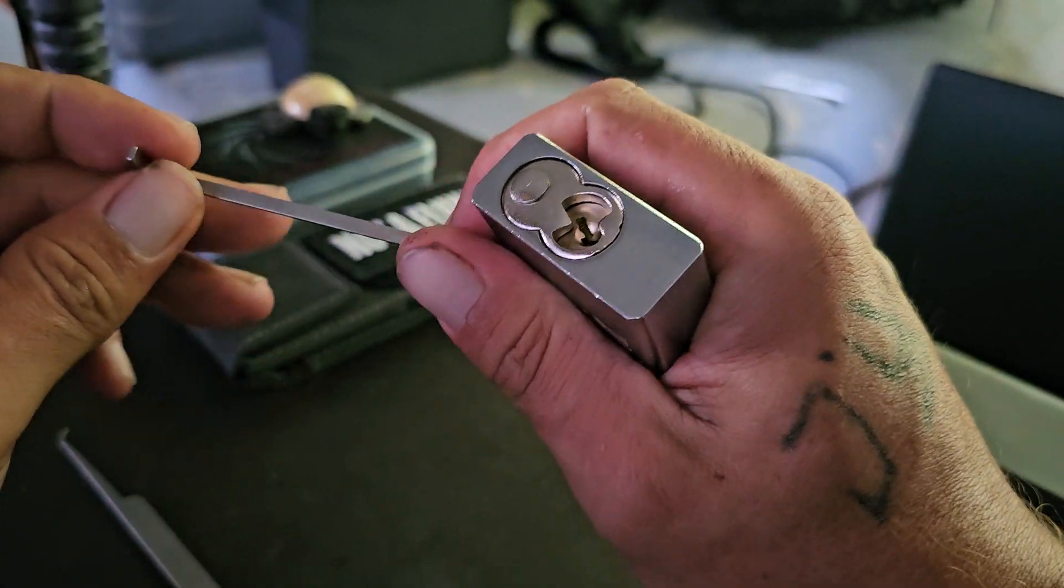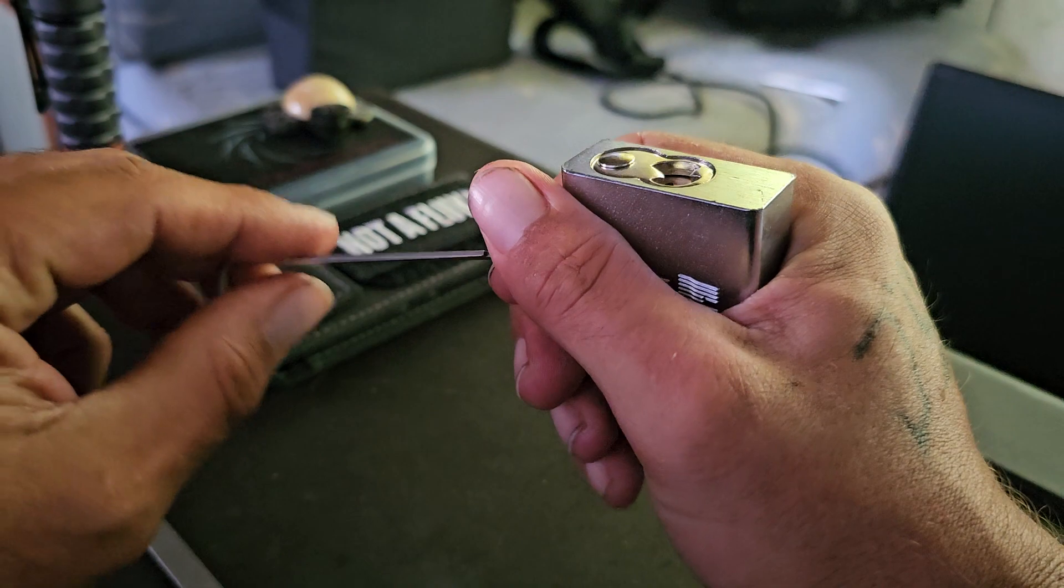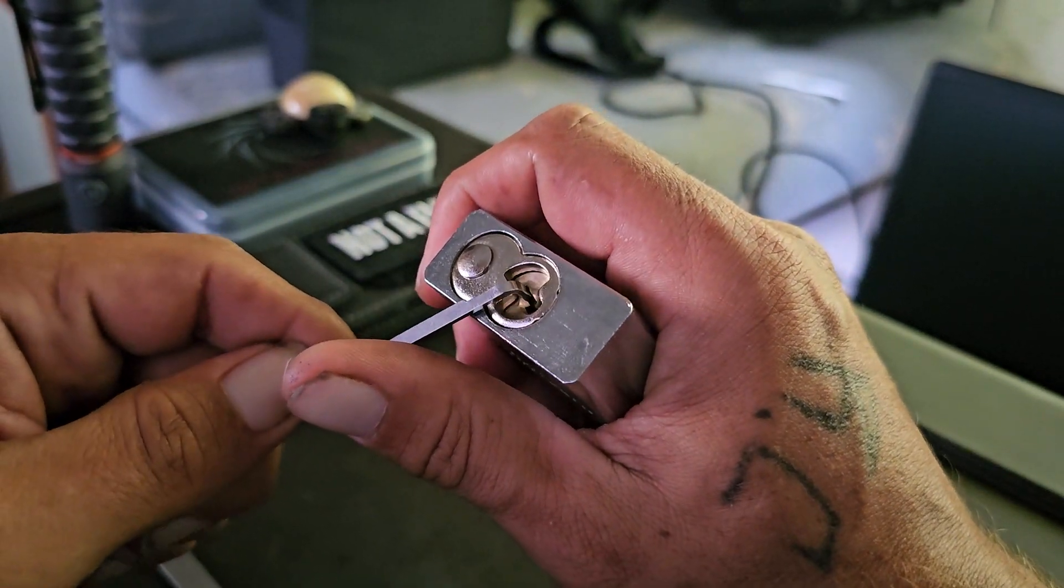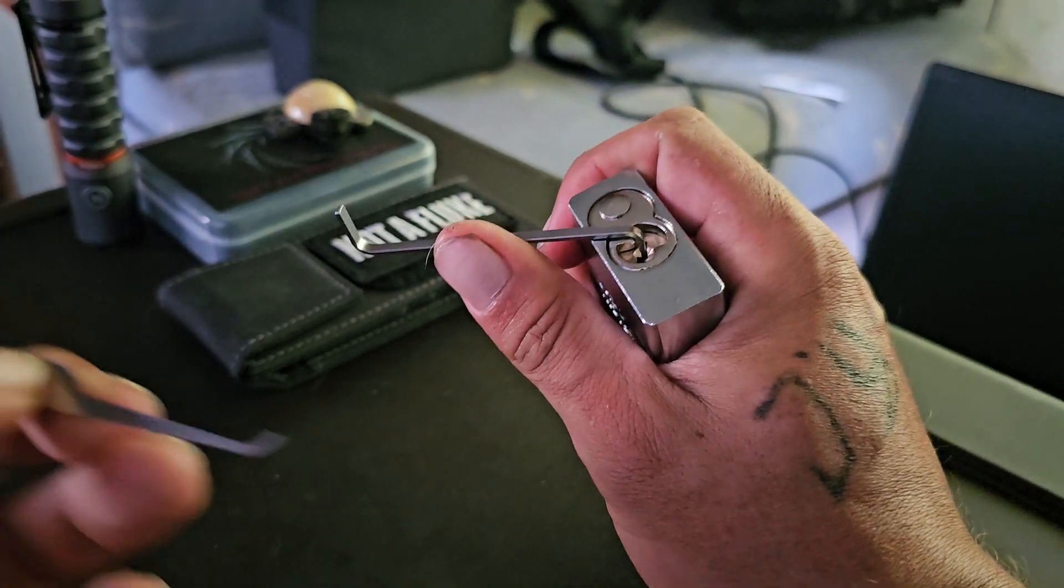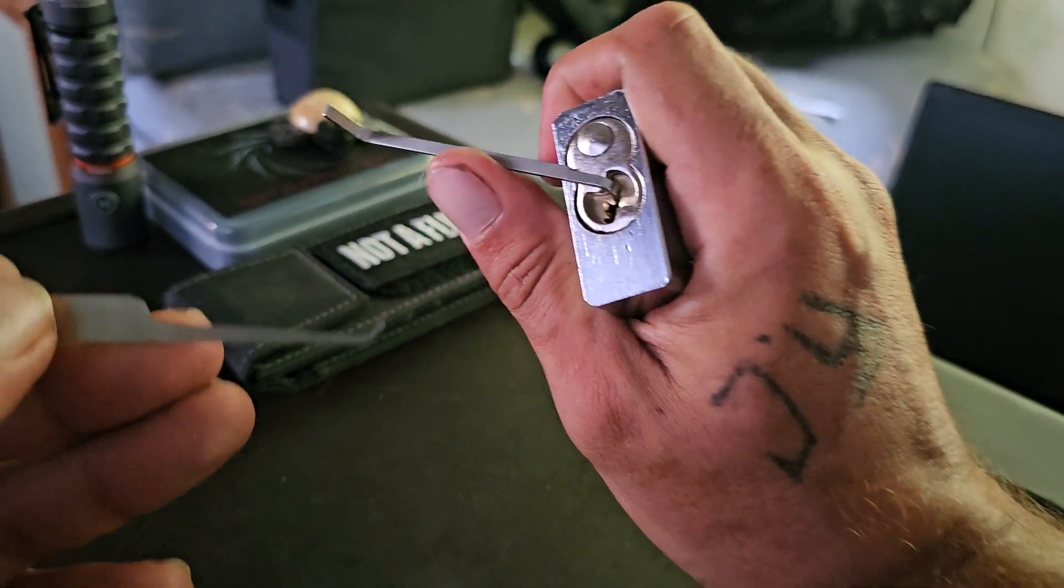I'm going to use a Covert Instruments 50,000 turning tool at the top of the keyway with the long hook from the Sparrows SSDev.